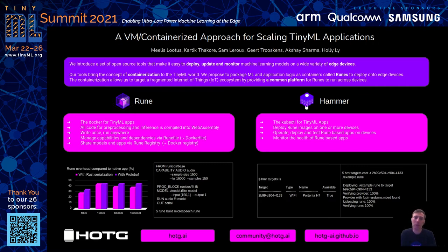On the poster, we also show some benchmark results. We compared the overhead of our model with the execution time of a native application. We currently have an overhead of around 40% to 45%, but we are working hard on reducing this and expect that in future releases this overhead will be much lower.